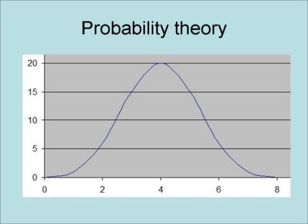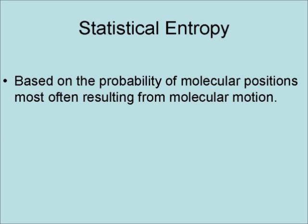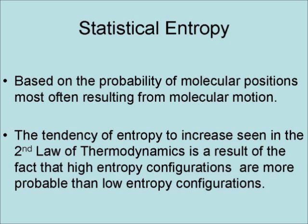This bell-shaped structure ends up approaching a smooth curve as the number of tries gets extremely large. It is also the pattern of the breakdown of the probability of patterns within specification. Statistical entropy is based on the probability of molecular positions, most often resulting from molecular motion. The tendency of entropy to increase, seen in the second law of thermodynamics, is a result of the fact that high entropy configurations are more probable than low entropy configurations.